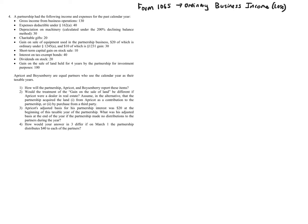On Form 1065, page one shows Ordinary Business Income and Loss. We also have Schedule K, which is where we find the separately stated items.